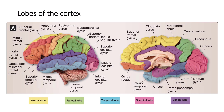Then is the parietal lobe, which is posterior to the central sulcus. You see the postcentral gyrus there — an important area of the brain. You also have the supramarginal gyrus, superior parietal lobe, and angular gyrus. The temporal lobe is separated from the parietal and frontal lobes by the lateral sulcus. You can see the superior temporal gyrus, middle temporal gyrus, and inferior temporal gyrus.